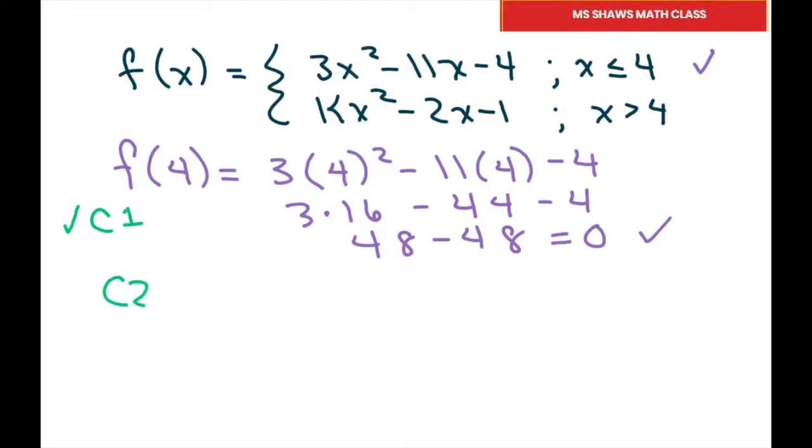In condition 2, what has to happen is the limit as x approaches 4 from the left, which would be this top part of f of x, should equal the limit as x approaches 4 from the right of f of x.